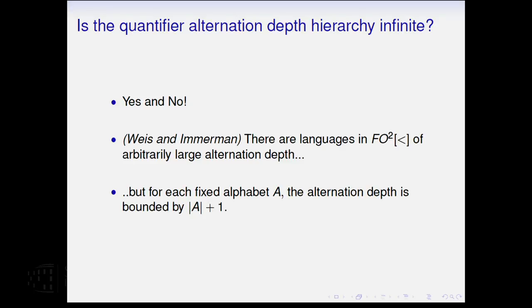And the answer for the first one, whether the alternation depth hierarchy is finite or infinite, is yes and no. And the yes and no is this. This is a result of Weiss and Emmerman. There are languages of arbitrarily large alternation depth. However, if you restrict the alphabet to a fixed finite alphabet, then the alternation depth is bounded depending on the size of the alphabet. I discovered with horror this morning as I was going over the talk that I had a number of off-by-one errors in the statement of this. I think this is the right statement. Close enough.